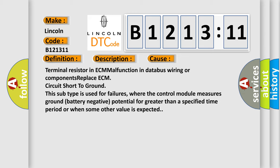This diagnostic error occurs most often in these cases: terminal resistor in ECM malfunction in databus wiring or components, replace ECM, circuit short to ground. This subtype is used for failures where the control module measures ground battery negative potential for greater than a specified time period or when some other value is expected.